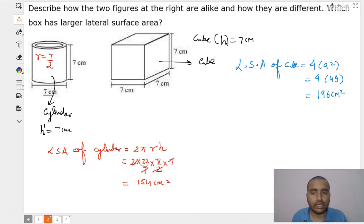So we can easily see the lateral surface area of cylinder that is 154 centimeter square is less than the lateral surface area of cube that is 196 centimeter square. Now, it is very easy to identify which box has the larger lateral surface area. So, from there, the question is very clear. Let us meet in the next video with the next problem. Till then, stay tuned.